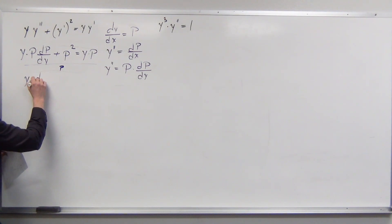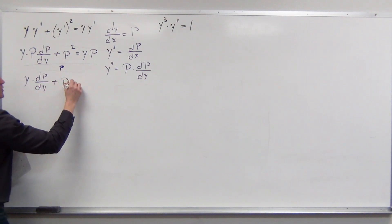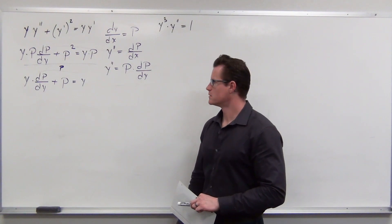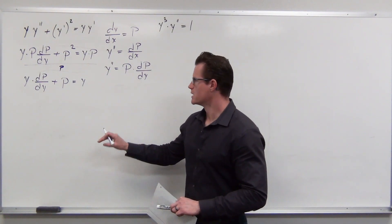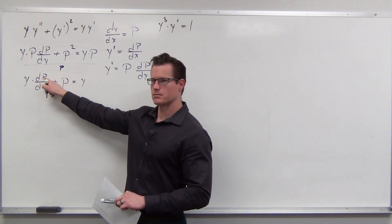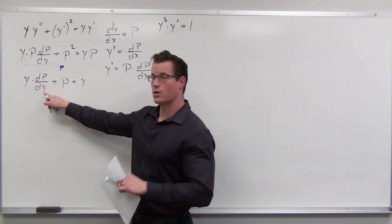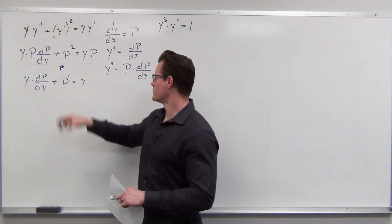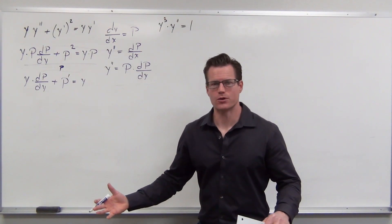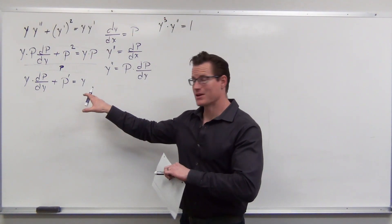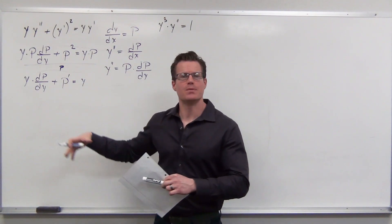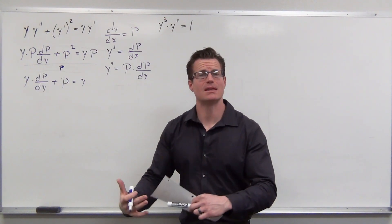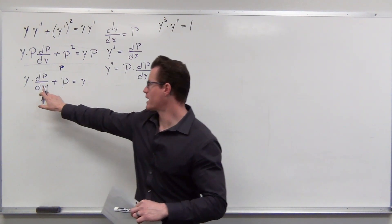After substitution, dividing everything through by p since every term has a p, we get: y·dp/dy + p = y. That's a first-order equation in terms of p and y. Look at it — p is to the first power, so this is linear!